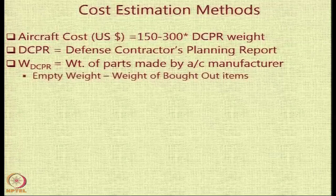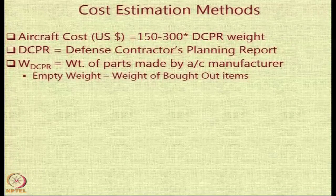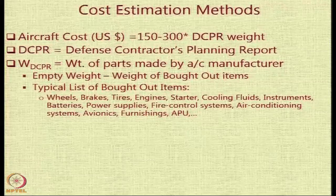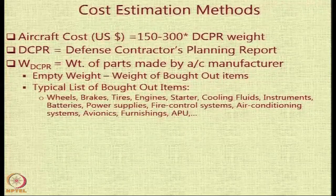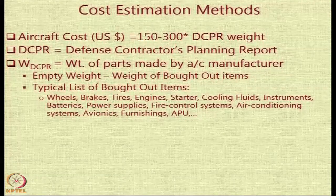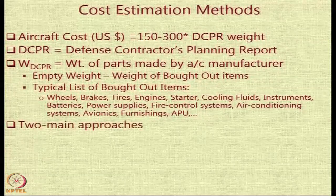So it is basically the empty weight of the aircraft minus the weight of the various bought-out items. There is a huge list of items which a manufacturer buys from ancillary suppliers and does not necessarily manufacture themselves. One estimate is that you multiply the DCPR weight by a number like 150 or 300 depending on the aircraft type, and you will get a basic estimate of the aircraft cost.